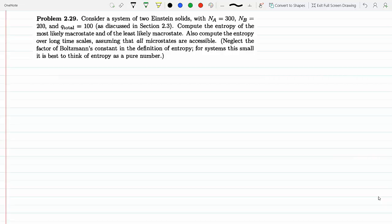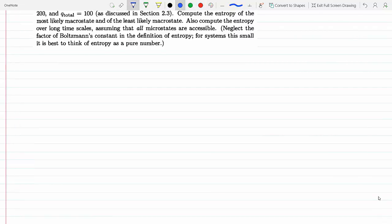Consider a system of two Einstein solids, NA = 300 and NB = 200, Q = 100, as discussed in the section. Compute the entropy of the most likely macrostate and the least likely macrostate. You could either look at the table in the book or we already know that the most likely macrostate is the one where the energy will be divided in a proportional way between the two solids.